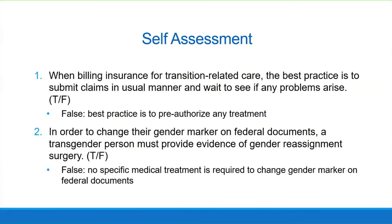Self-assessment answers. 1. When billing insurance for transition-related care, the best practice is to submit claims in the usual manner and wait to see if any problems arise — False. The best practice is to pre-authorize any treatment. 2. In order to change their gender marker on federal documents, a transgender person must provide evidence of gender reassignment surgery — False. No specific medical treatment is required to change the gender marker on federal documents.